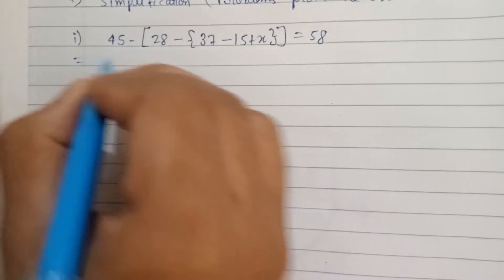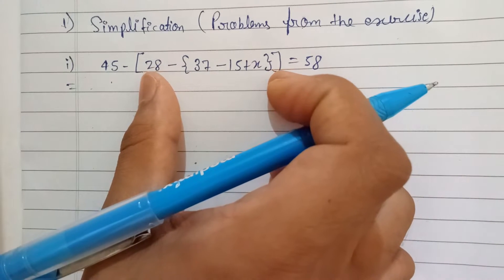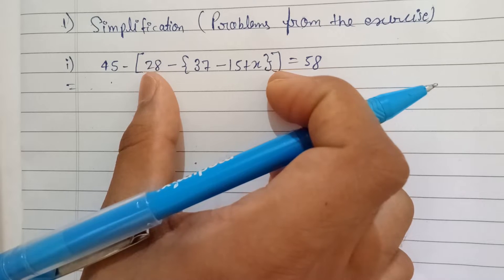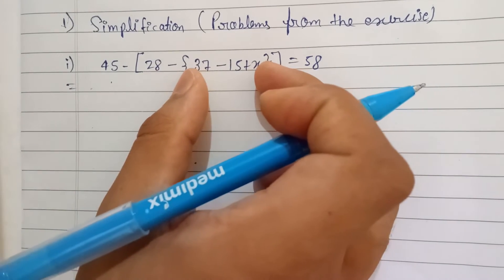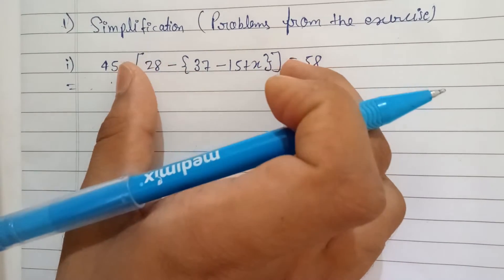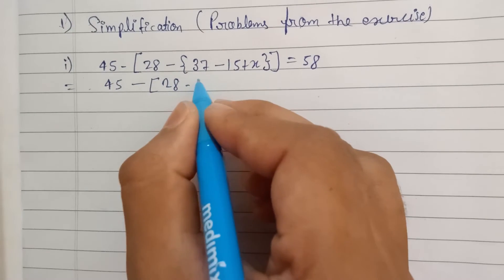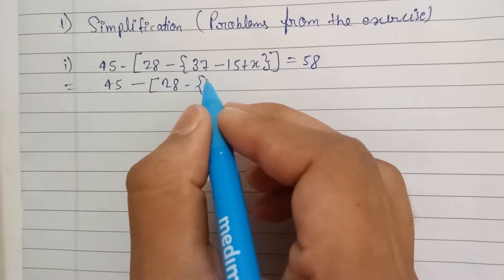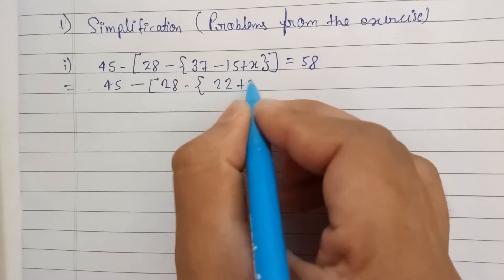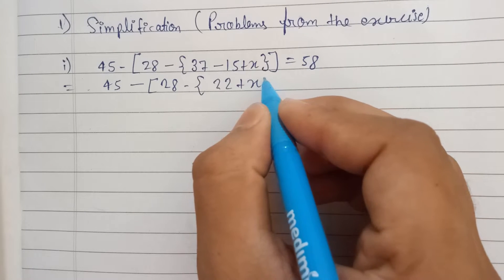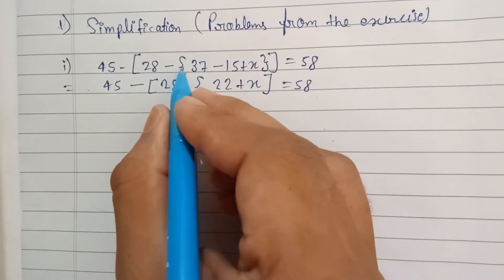To solve this, first we have to check the brackets. If brackets are there, we check whether there are two brackets or one bracket. Here we can see two brackets. So first we solve the innermost bracket: 37 minus 15 gives 22. So we get 22 plus X, and the inner bracket closes. Now we have 45 minus bracket 28 minus 22 plus X.